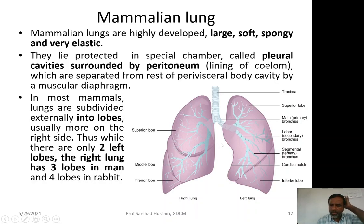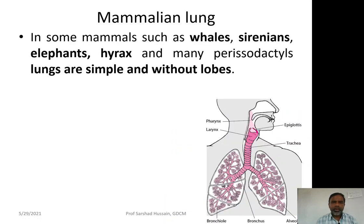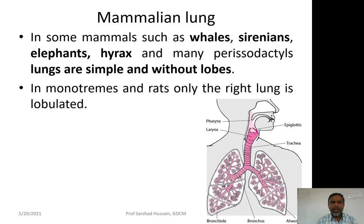In most mammals, lungs are subdivided externally into lobes. In humans, the left lung is divided into two lobes — superior and inferior — and the right lung into three lobes — superior, middle, and inferior. In some mammals such as whales, sirenians, elephants, hyraxes, and many perissodactyls, lungs are simple without any lobes. In monotremes and rats, only the right lung is lobulated.